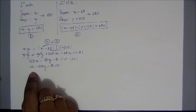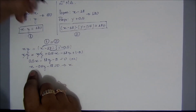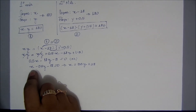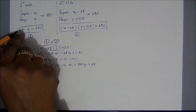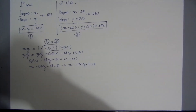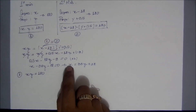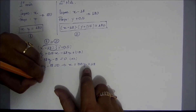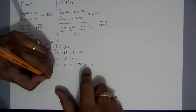Agora vou isolar o valor de X. X é igual a 36Y mais 18. No início, foi dito que X vezes Y é igual a 180. Então, no lugar desse X, vou inserir 36Y mais 18. Lá da primeira função, X vezes Y é igual a 180. No lugar de X, vou substituir por 36Y mais 18, vezes Y, porque somente o X representa 36Y mais 18. Ficará: (36Y mais 18) vezes Y igual a 180.